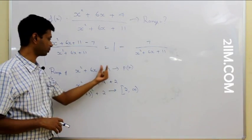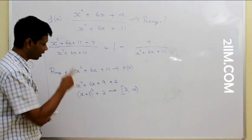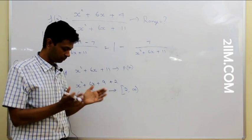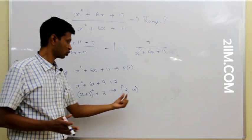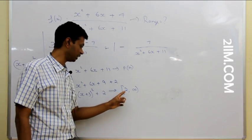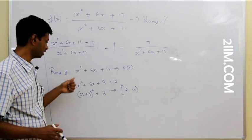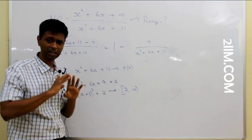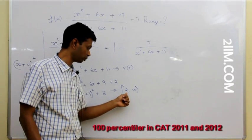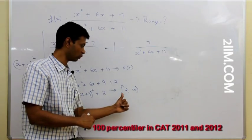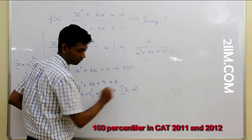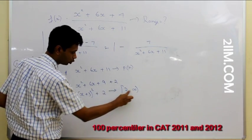So x² + 6x + 11 goes from 2 to infinity. Now for 1/(x² + 6x + 11): as the denominator gets larger, the value gets smaller, and as the denominator gets smaller, the value gets larger — as long as we're dealing with positive numbers. Luckily, x² + 6x + 11 is completely positive, going from 2 to infinity. So 1 divided by it will go from 0 to 1/2, since 1/infinity approaches 0 and 1/2 is 1/2.